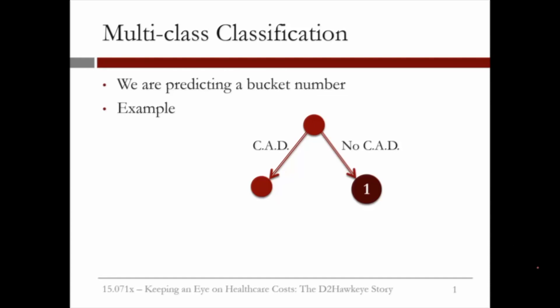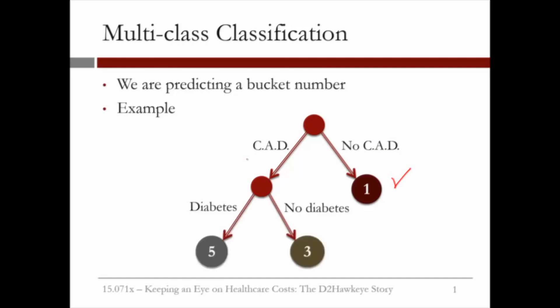To give you an example, let us consider patients that have two types of diagnosis: coronary artery disease and diabetes. So if a patient does not have coronary artery disease, we classify the patient as bucket one. If the patient has coronary artery disease, then we check whether the person has diabetes or not.